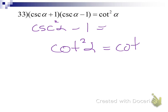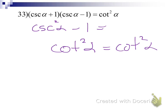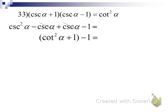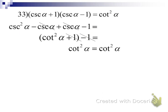The PowerPoint took it in a slightly different direction: substitute for cosecant squared — cosecant squared of alpha equals cotangent squared of alpha plus one. That's one of our original identities. Then the plus one and minus one cancel and we're left with cotangent squared of alpha equals cotangent squared of alpha. Either method works.